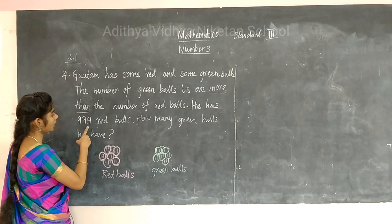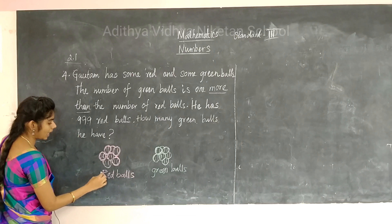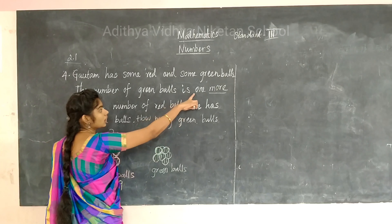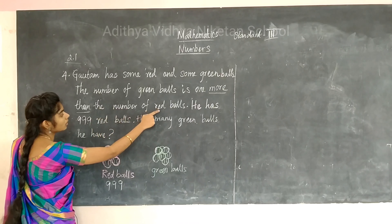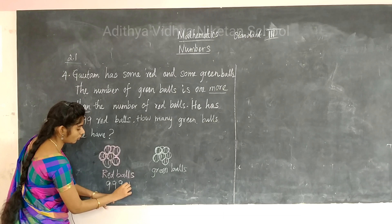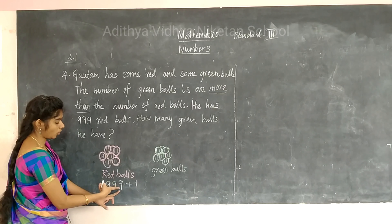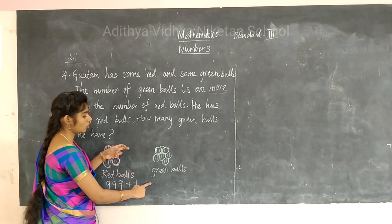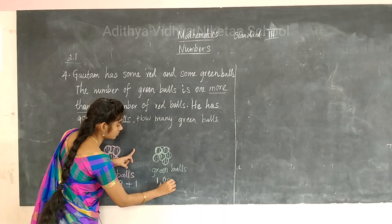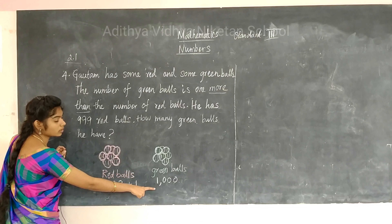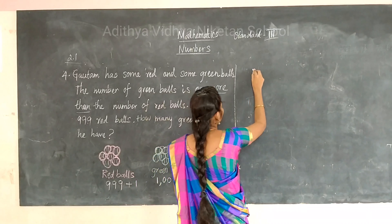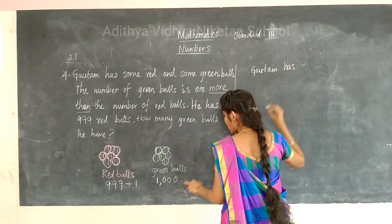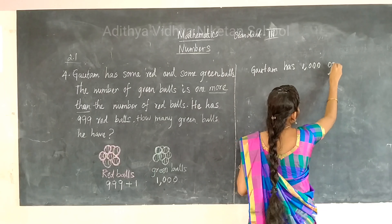He has 999 red balls. Since green balls is one more than red balls, we add 1 to 999. What do you get? 1000. So the answer is 1000 green balls. Gautam has 1000 green balls.